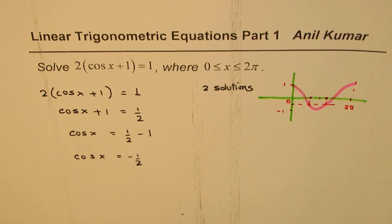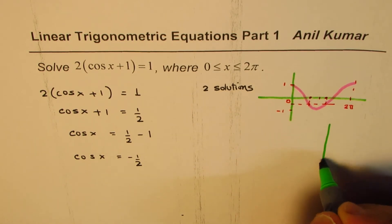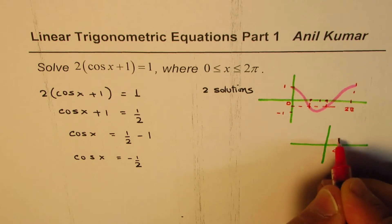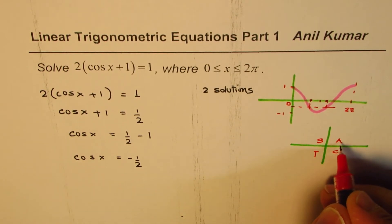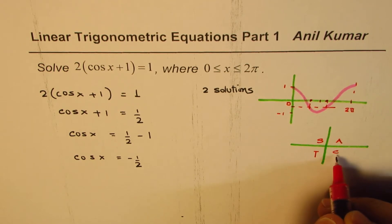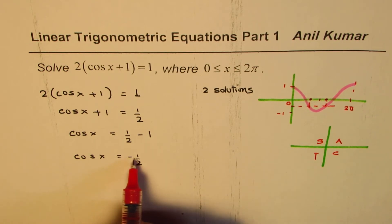We could also find the quadrant in which these solutions lie using the CAST rule. Let me write down the CAST rule here: C-A-S-T. All are positive in quadrant one, sine in quadrant two, tan in quadrant three, cosine in quadrant four. Now we are looking for cos x to be negative, -1/2.